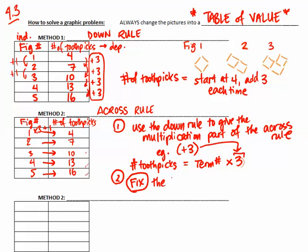So we need to fix the answer with an addition or subtraction. So in this case, I have 1 times 3 because the 3 comes from the down rule. So this 3 is part of the down rule. But 1 times 3 is not equal to 4. In order to fix, I need to add that 1. So now I need to add 1. So this part is called the fix.